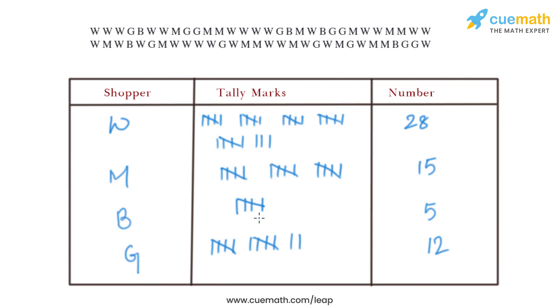Now let's draw the bar graph. The numbers are 28, 15, 5, and 12. We will take the scale as 1 unit equals 5 and draw the bar graph accordingly.